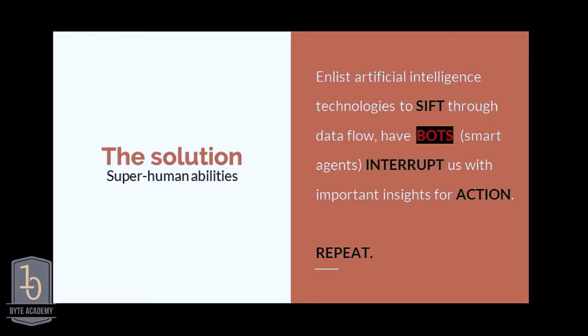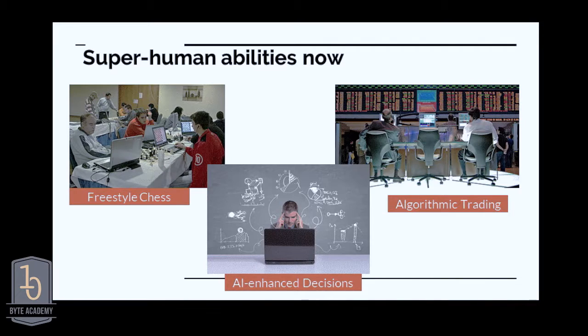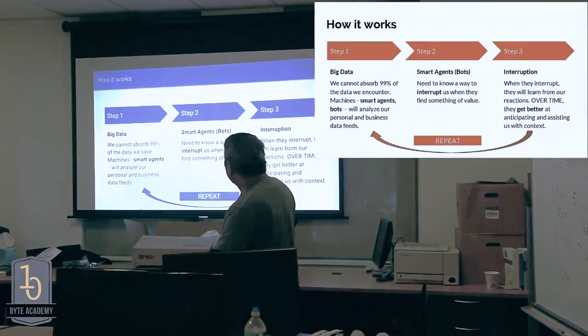Superhuman abilities are available now. Freestyle chess is computers and chess algorithms training. Anytime you see someone downloading stuff from a truck with a hand truck is also using superhuman abilities. Now AI enhanced decisions are right up there.